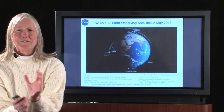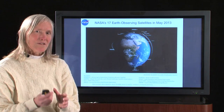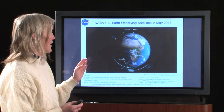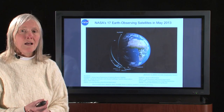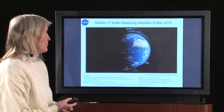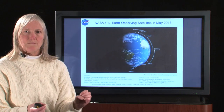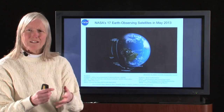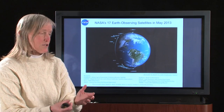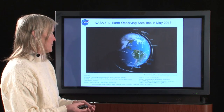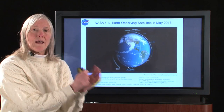NASA, in addition to the magnificent things it's doing with outer space studies and with humans in space, also does a lot of earth sciences. We have 17 earth-observing satellites in orbit as of May of 2013, and more now because some others have been launched. All these satellites are collecting data about the earth — about hurricanes, volcanoes, sea surface temperature, phytoplankton in the oceans, sea ice, land ice, atmospheric chemistry, and all sorts of things. Every one of them requires math in order to analyze the data.